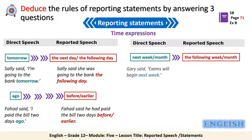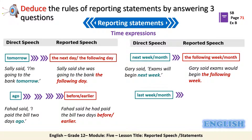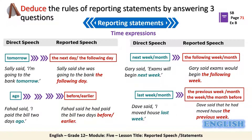Next, 'next week' or 'next month' should be written as 'the following week' or 'the following month' — for example, 'Gary said exams will begin next week' becomes 'Gary said exams would begin the following week.' Finally, 'last week' or 'last month' should be changed to 'the previous week' or 'the previous month,' or 'the week before' or 'the month before' — for example, 'Dave said I moved house last week' becomes 'Dave said that he had moved house the previous week.'